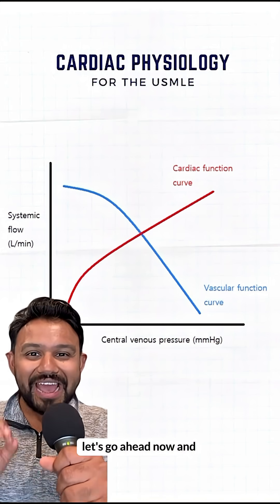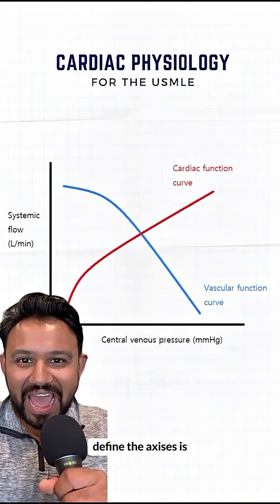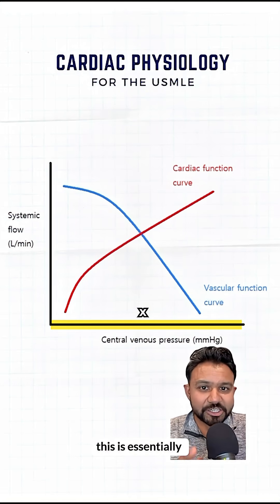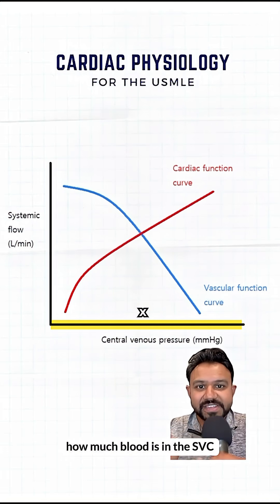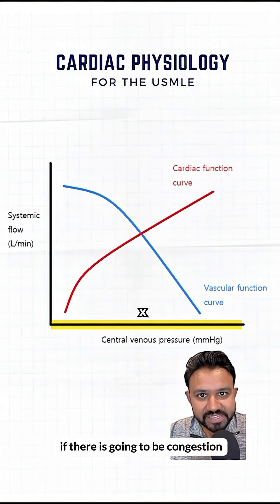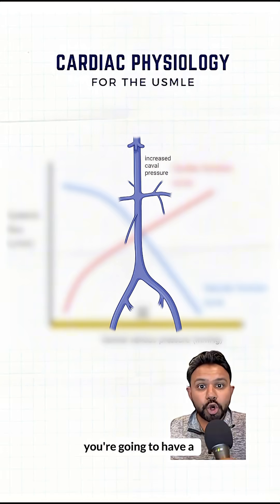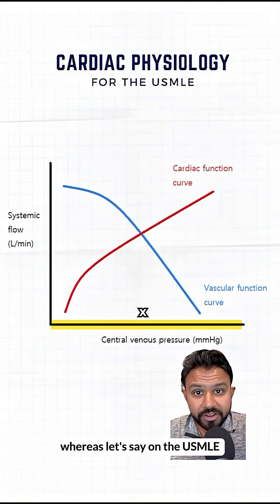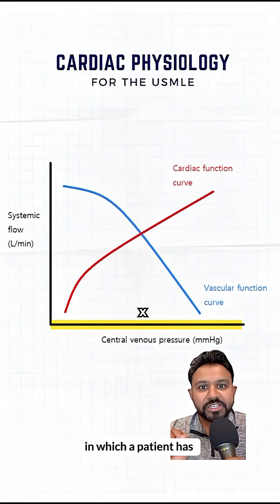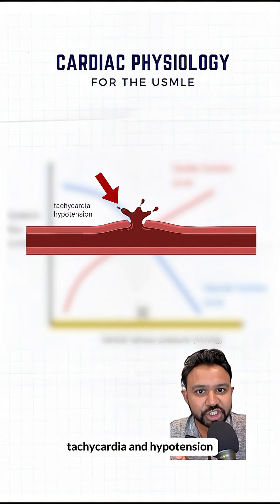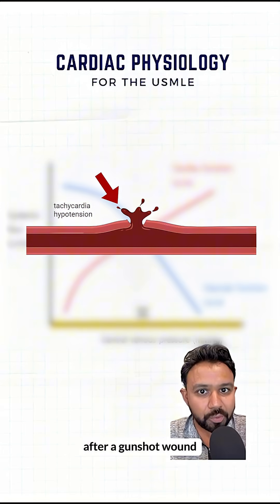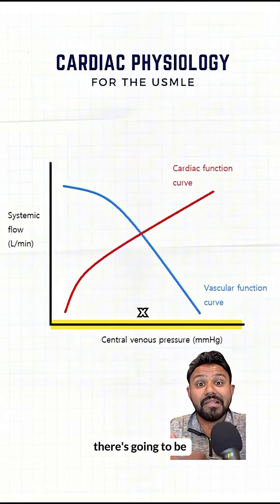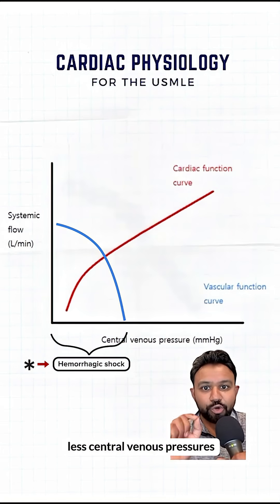So with that in mind, let's go ahead and define the axes. The x-axis is going to be central venous pressure — essentially how much blood is in the SVC and the IVC. If there is congestion, you're going to have a high central venous pressure. Whereas on the USMLE, if a patient has tachycardia and hypotension after a gunshot wound, your SVC and IVC are going to be very empty, with less central venous pressure.